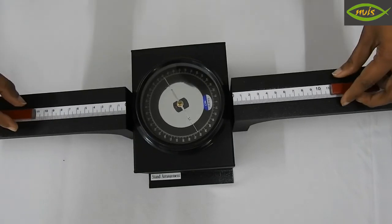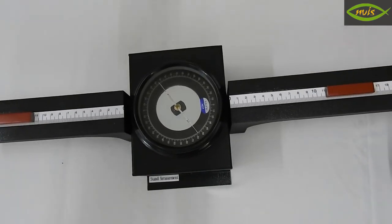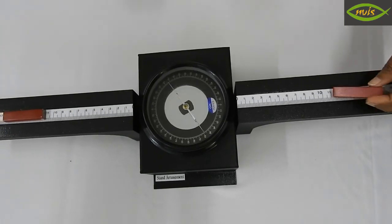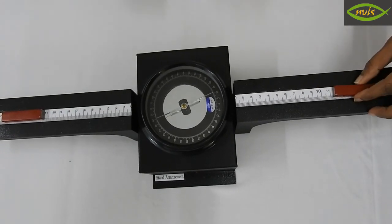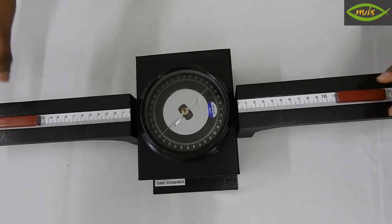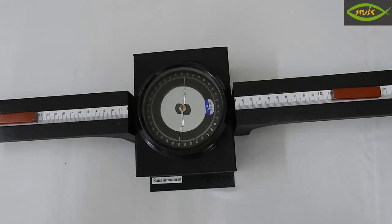Note the deflections as theta1 and theta2. Similarly repeat for R3 and R4 distances. Note the deflection of compass needle as theta3 and theta4.